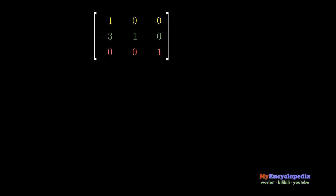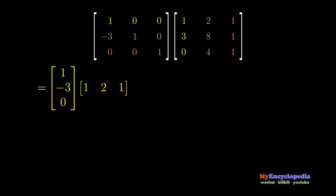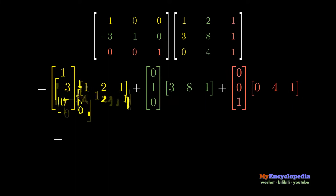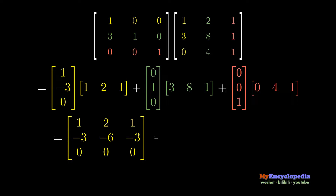The outer product view is interpreted as follows. The resulting matrix is the sum of n rank-1 matrices, where the first matrix is the product of column 1 outer multiplied by row 1, then column 2 by row 2, plus column 3 by row 3. Finally, sum those rank-1 matrices together.